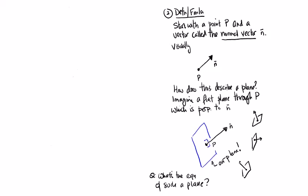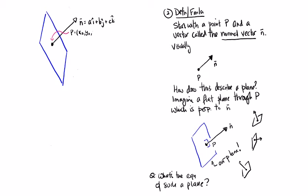Let's draw a detailed picture. We draw a plane, draw a normal vector perpendicular to it, and label things. The normal vector n equals ai + bj + ck. The point P has coordinates (x₀, y₀, z₀). Then we take another point Q with coordinates (x, y, z). We're going to ask a very simple question: what would it mean for Q to be on the plane?